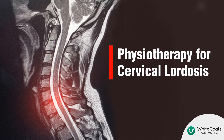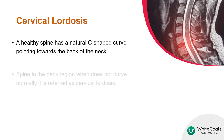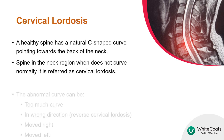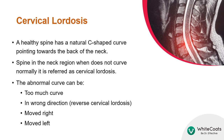Physiotherapy for Cervical Lordosis. A healthy spine has a natural C-shaped curve pointing towards the back of the neck. When the spine in the neck region does not curve normally, it is referred to as cervical lordosis. This abnormal curve can be too much curve, a curve in the wrong direction, a curve moved right, or a curve moved left.